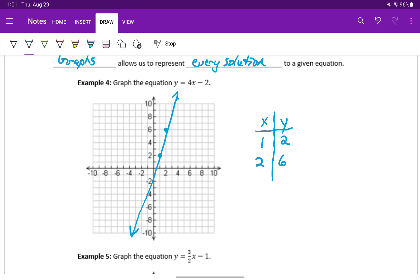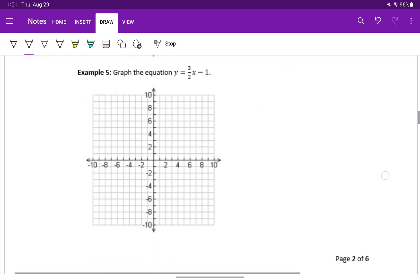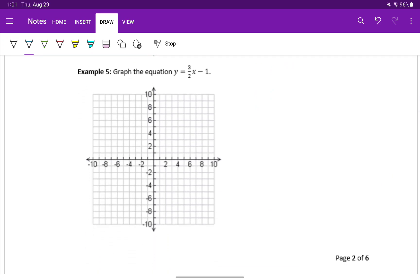And again, we could continue that pattern, we could generate more points, and they would continue to be on this straight line that we generated. So constructing a table of values is one method for graphing an equation, graphing a linear equation.